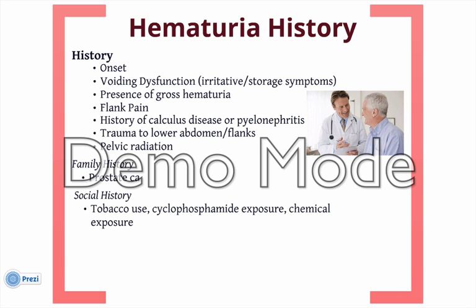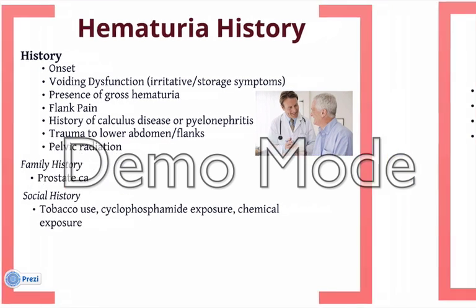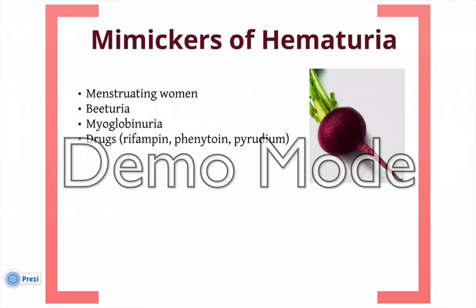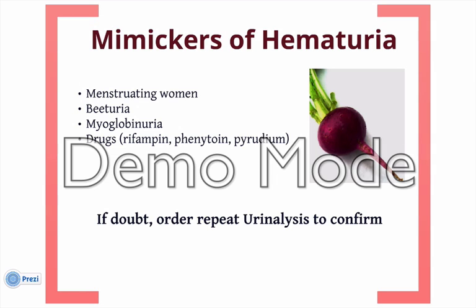In some instances, hematuria can actually be mimicked by several benign conditions. Women who are menstruating can have a false positive on urinalysis. People ingesting too many beets can have a red discoloration of their urine. In some instances, conditions like myoglobinuria or ingestion of certain compounds like pyridium can cause a discoloration of the urine and are not true hematuria. If any doubt arises, one can repeat the urinalysis.